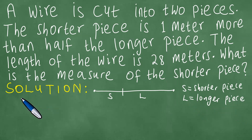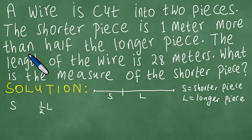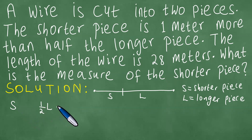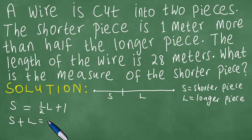With this setup, the shorter piece is one meter more than half the longer piece. In other words, we are comparing S with half of L. The shorter piece is one meter more than half the longer piece, which means half the longer piece is one meter less than S, and if we add one they are equal. Also, the length of the wire is 28 meters, meaning the shorter piece plus the longer piece equals 28 meters.